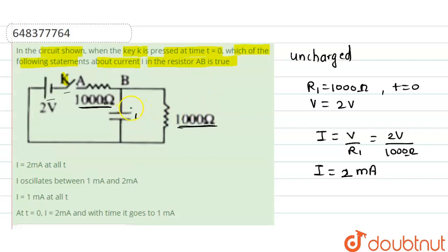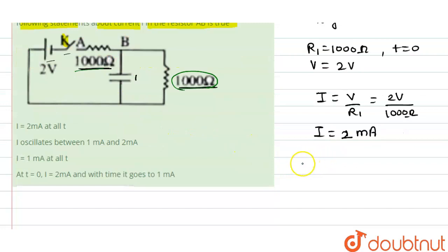So now the current will also flow through this 1000 ohm resistor also. That's why now the effective resistance of the circuit must be other than 1000 ohm, because now this and this resistors are in series combination with each other. So the equivalent resistance will be 1000 plus 1000, it is equal to 2000 ohm.